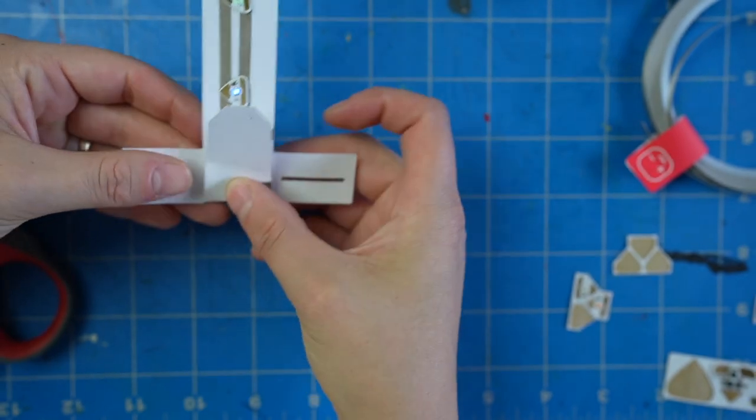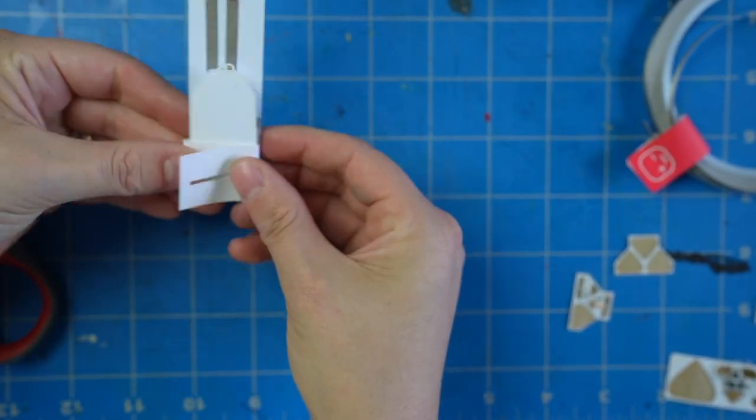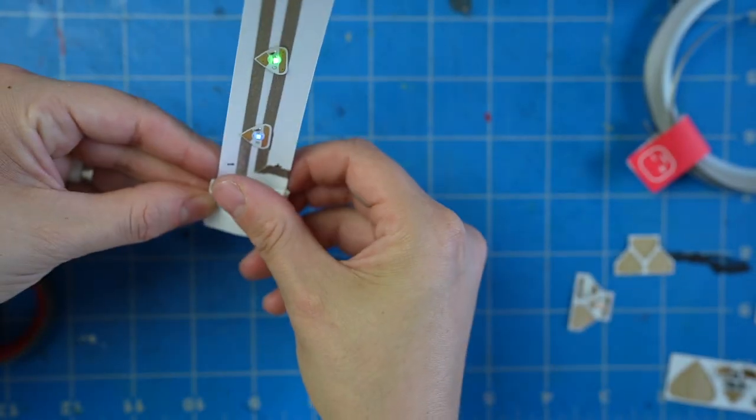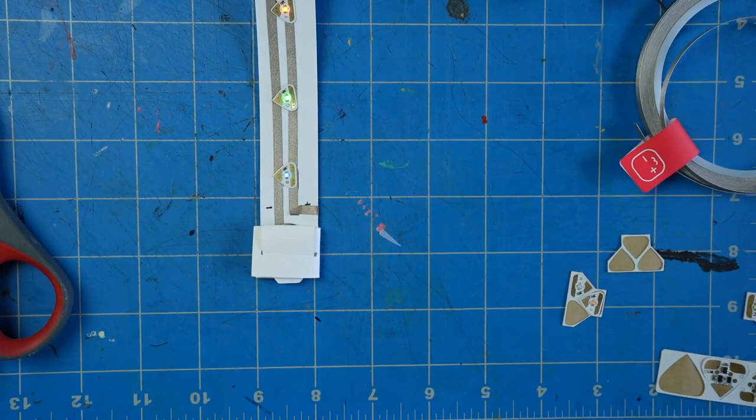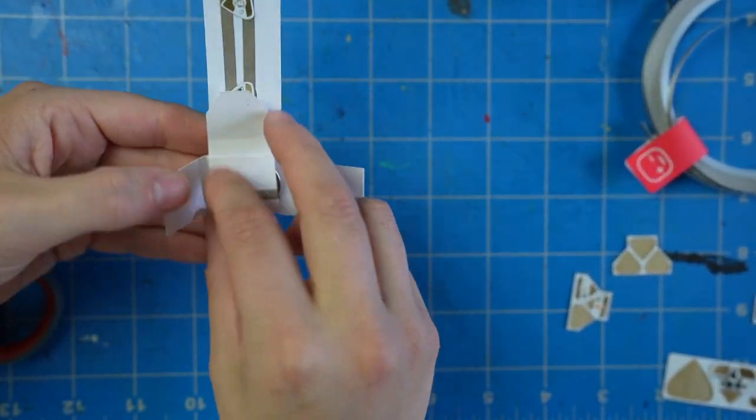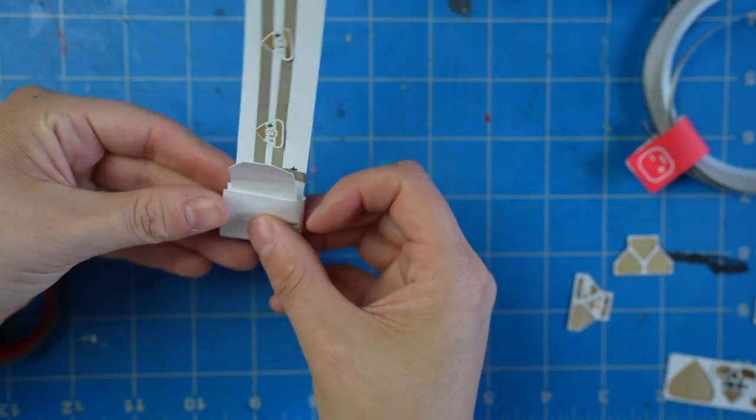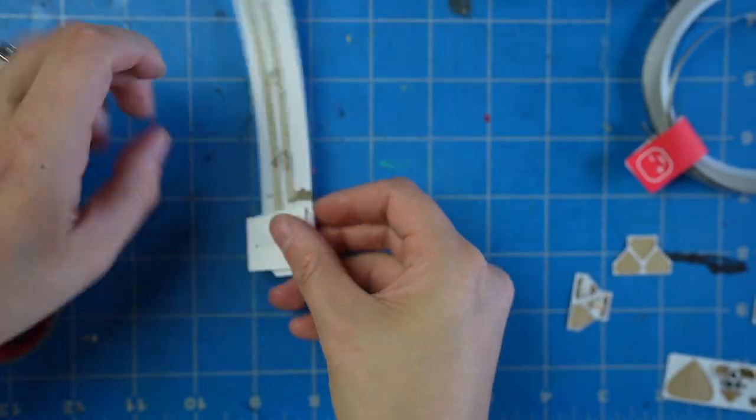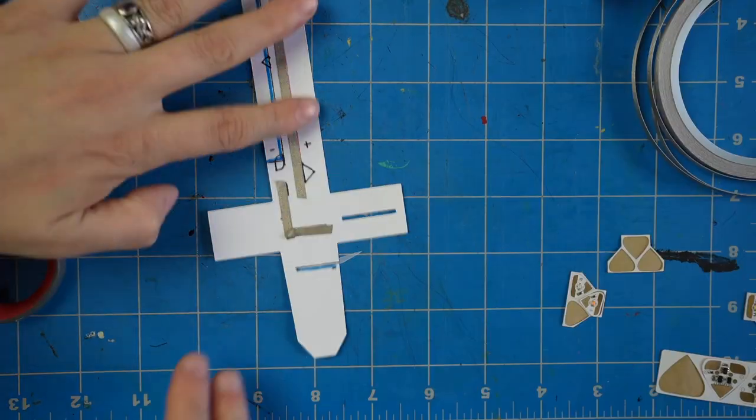And finally I'll grab my coin cell battery and give this circuit a test just to make sure that everything is working well. And it looks great so I'll fold up that battery pack into the off position for now and I'm going to set it to the side. The light strip template that I'm going to share with you shows you how to fold that battery pack into on and off positions.